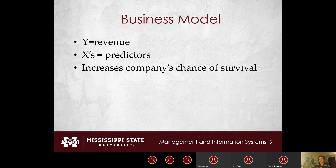For example, with a gas station, predictor variables for revenue might include: number of competitors (fewer competitors would suggest higher revenue), the average amount driven by local customers (since gas demand is tied to driving), and gas prices (if the price we pay for gas rises, we may see some decrease in overall demand).